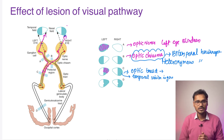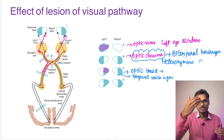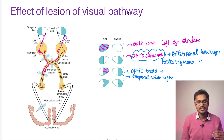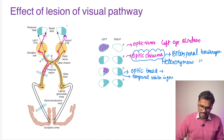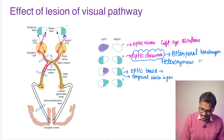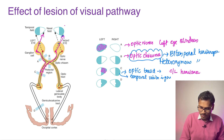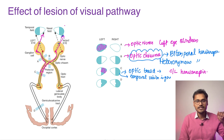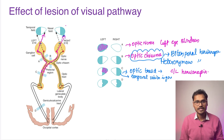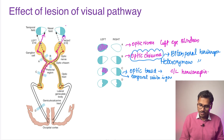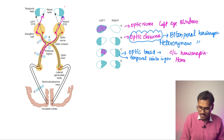The lesion is on the left side, but the patient cannot see anything on the right side. This is because the left optic tract carries both the nasal fibers of the right eye (which receive the right temporal field) and the temporal fibers of the left eye. The complete right field is gone, making this a contralateral hemianopia, also called homonymous hemianopia.